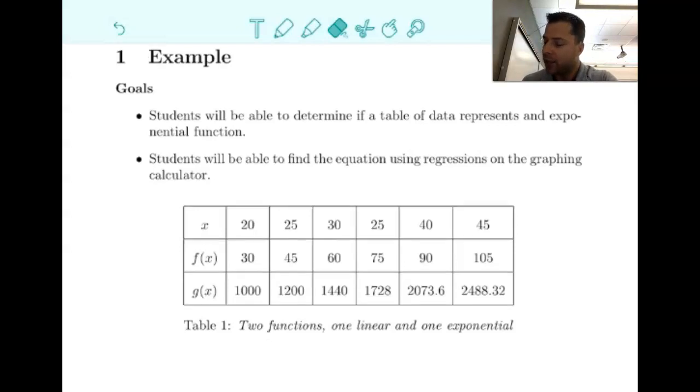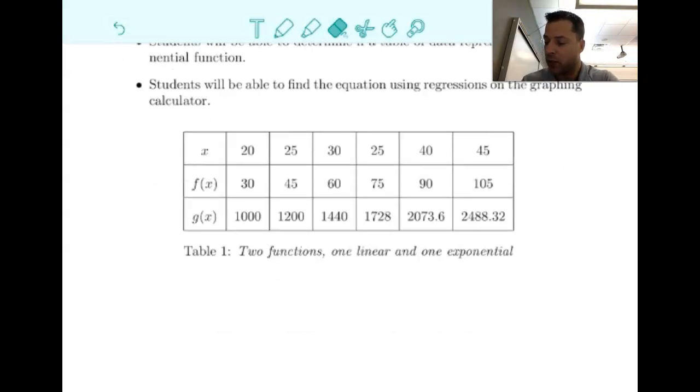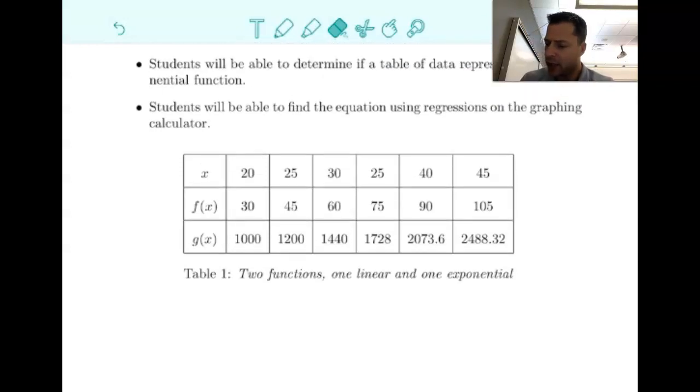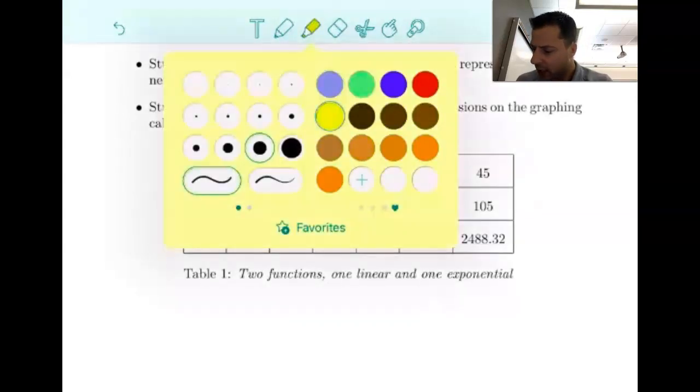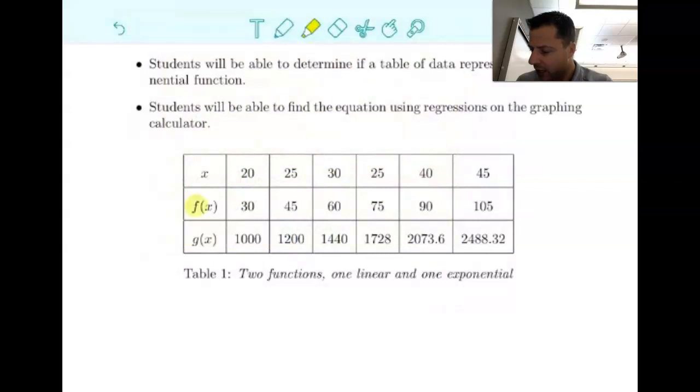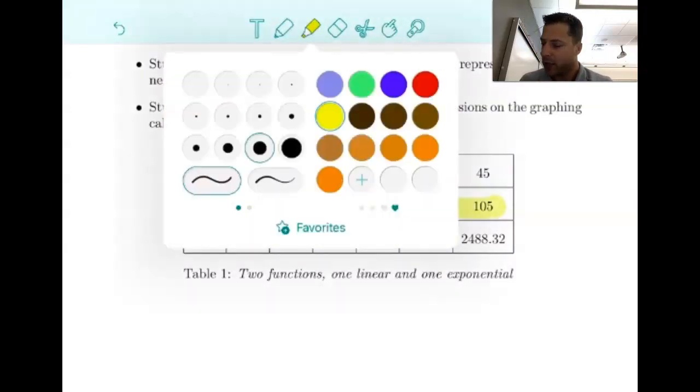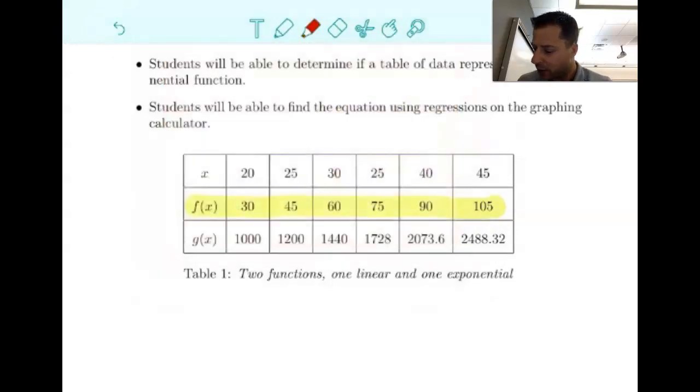Okay, so the table says two functions, one linear and one exponential. I did put both of them in there. So I want to take a look at this first table here, and I really want to emphasize something. If we look at the differences between these two tables, you can see that one of these appears to be changing at a constant rate.